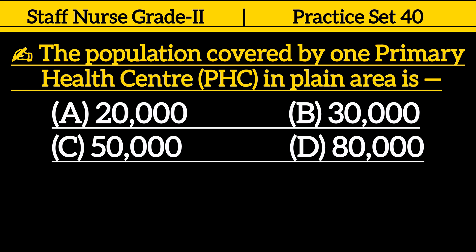The population covered by one primary health center in a plain area is: Option A. 20,000. Option B. 30,000. Option C. 50,000. Option D. 80,000.